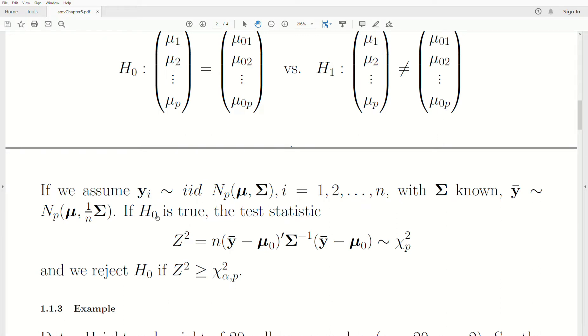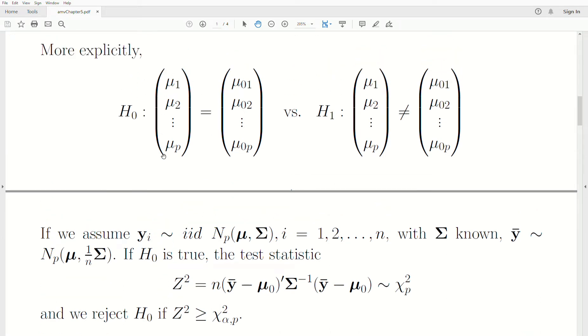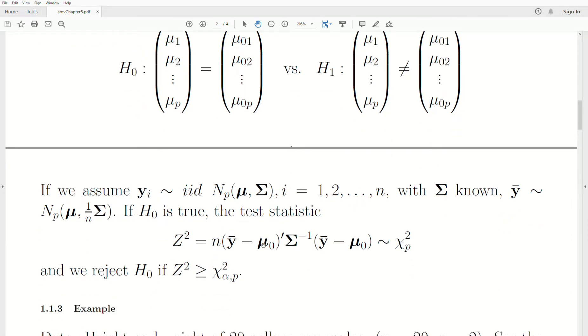Now, if H₀ is true, meaning our mean vector is equal to this hypothesized value, then Z² is this value, and it follows a chi-squared distribution. And we reject H₀ if Z² is bigger than some cutoff value, chi-squared with α and degrees of freedom P. α corresponds to the area in the right tail of a chi-squared distribution, P is the degrees of freedom.